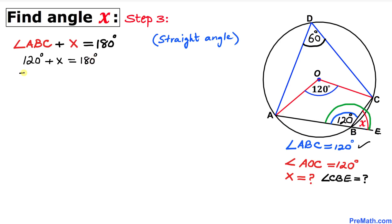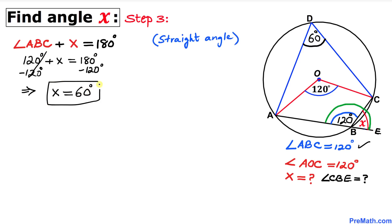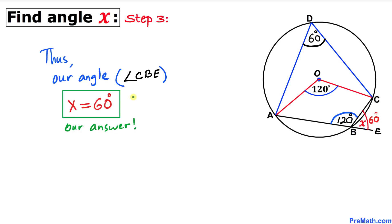Solving for x by subtracting 120 degrees from both sides, our angle x turns out to be simply 60 degrees. That is our final answer. Thanks for watching, and please don't forget to subscribe to my channel for more exciting videos.